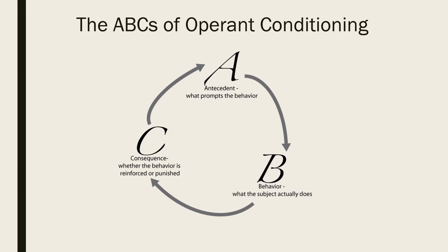Operant conditioning, sometimes referred to as instrumental conditioning, is a method of learning that occurs through rewards and punishments for behaviour. Through operant conditioning an individual makes an association between a particular behaviour and a consequence. For example, when a lab rat presses a blue button he receives a food pellet as a reward, but when he presses the red button he receives a mild electric shock. As a result, he learns to press the blue button but avoid the red button.